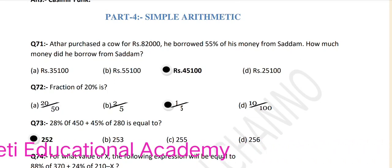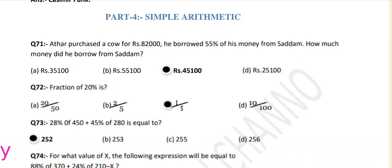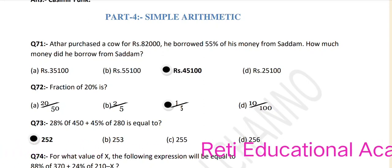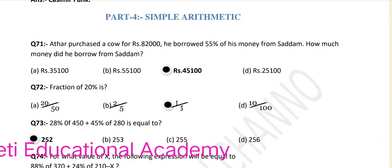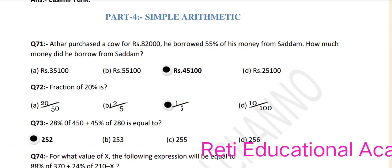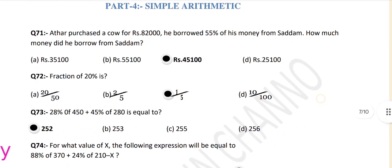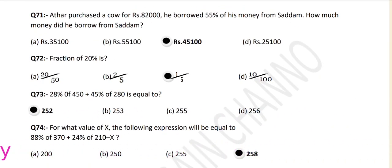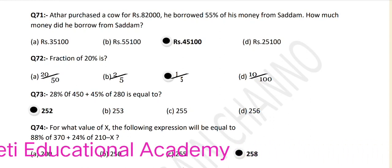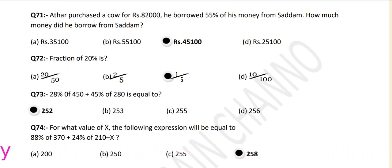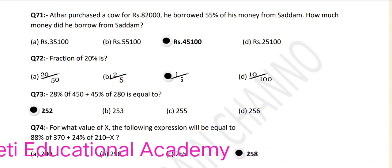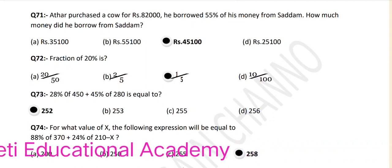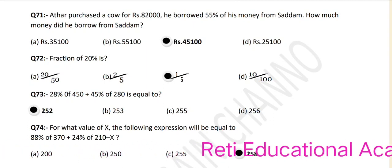Stay connected with Reti Educational Academy YouTube channel and follow us on TikTok and Facebook. Thank you. Here we go. Question number 71: Arthur purchased a cow for rupees 82,000. He borrowed 55 percent of his money from Saddam. How much money did he borrow from Saddam? Simply find 55 percent of 82,000.